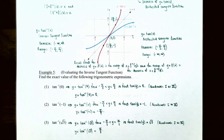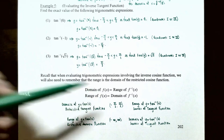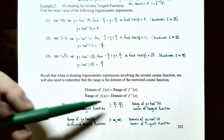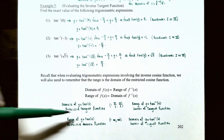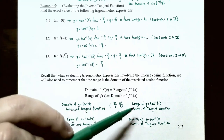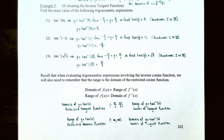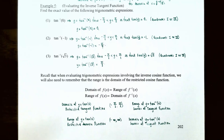Recall that when evaluating inverse trigonometric expressions, the range of the inverse function is the domain of the restricted original function. The domain of the restricted tangent function — from negative pi over 2 to pi over 2, not including the endpoints — is now the range of the inverse tangent function, y equals arctan of x. And the range of the restricted tangent function — all real numbers — is now the domain of the inverse tangent function.